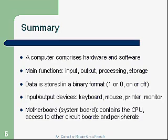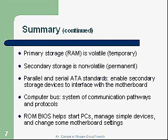The motherboard, or system board, contains the CPU and provides access to the other circuit boards and peripherals. Primary storage, which is your RAM, is volatile or temporary — it goes away if power goes off. Secondary storage, which is non-volatile and permanent like your hard drive, stays there even after the power is turned off. Parallel and serial ATA standards enable secondary storage devices such as the hard drive to interface with the motherboard. The computer bus is a system of communication pathways and protocols — we use the buses to move data.